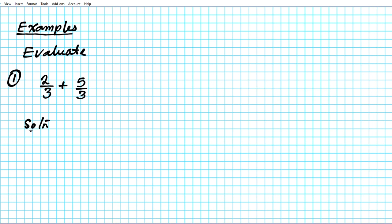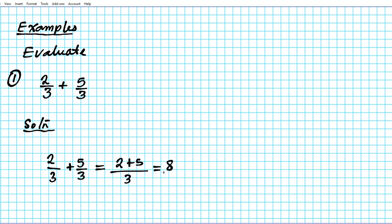Now how do we do this? Looking at the two fractions, two over three plus five over three: the first fraction is a proper fraction because the numerator is smaller than the denominator, and the second fraction is an improper fraction. These forms are good for us to add. So you simply add the numerators — two plus five — divided by the denominator three. Two plus five is seven.